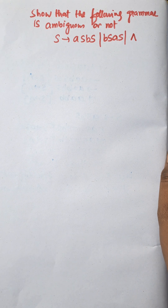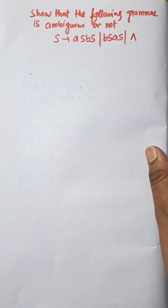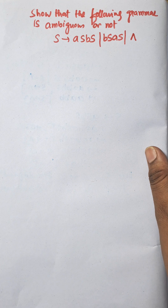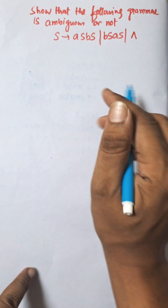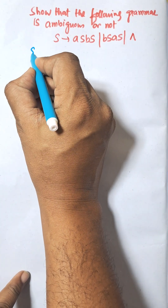In this video, I am going to check if a grammar is ambiguous or not. A grammar is ambiguous if for any string w there are two different parse trees for the same string, meaning there are two different derivations for producing the same string w. Let us consider the production rules.